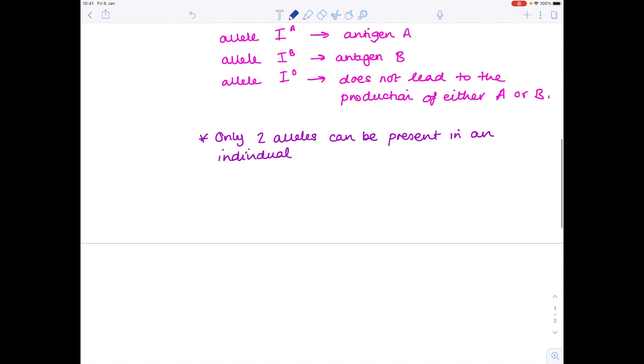And seriously the most important thing to take away from this video is that the alleles IA and IB are codominant whereas IO is recessive to both IA and IB and that's going to be so important when we look at some crosses.